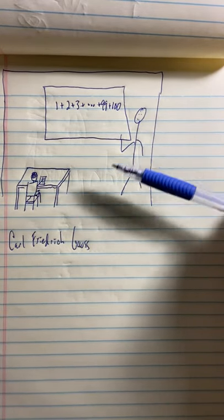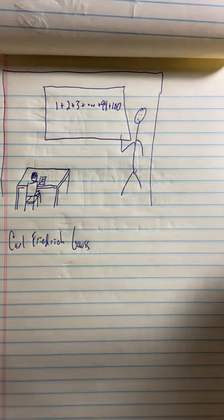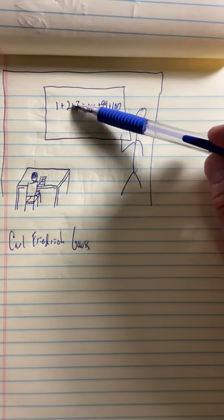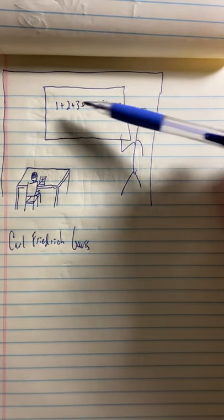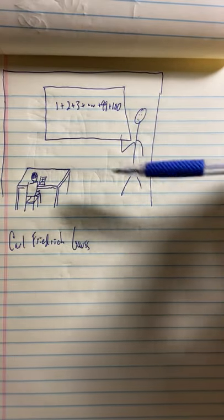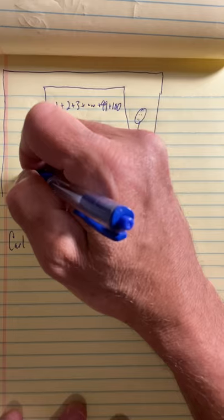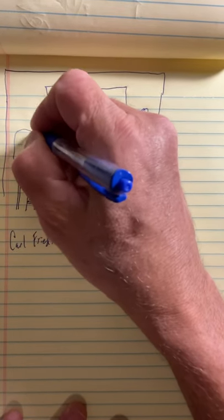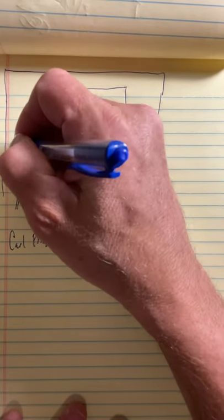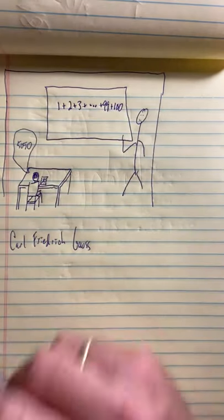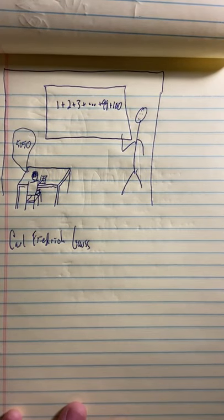So on the first day of school the teacher wants to keep all the kids busy so he can run an errand and so he gives them this challenge problem. Add up the first hundred integers. Add them up I'll be right back. But before he can leave young Gauss says the answer. He says it's 5050. How did he do that?